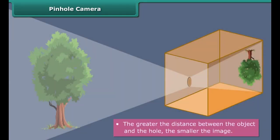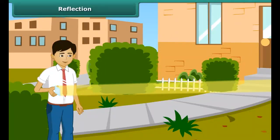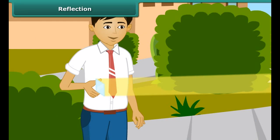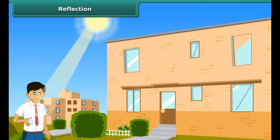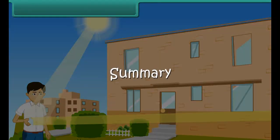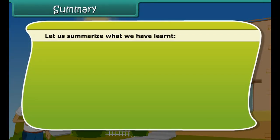Let us learn how to make a pinhole camera. Take a cardboard or tin box and cut open one side, then paste a tracing paper over it. Pierce a very small hole in the center of the side opposite to the tracing paper. Close the box from all sides — the pinhole camera is ready to use.